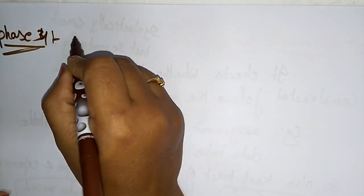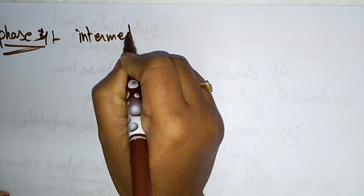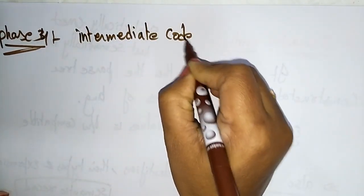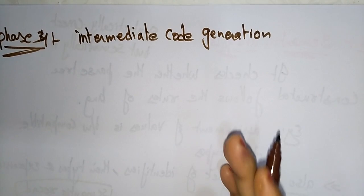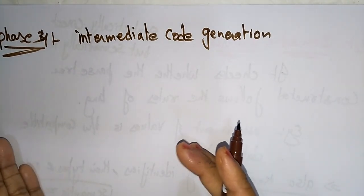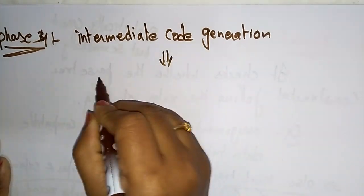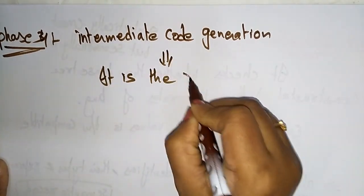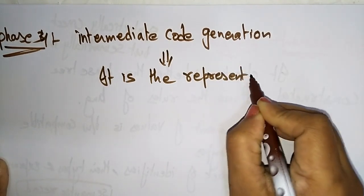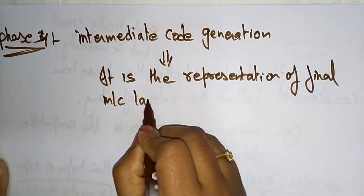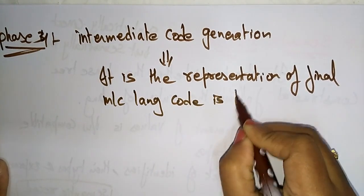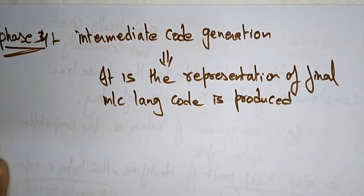Phase 4 is intermediate code generation. It is the representation of the final machine language code that is produced. So far we have seen the analysis phase; now we enter into the synthesis phase.